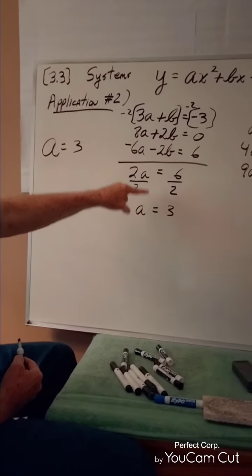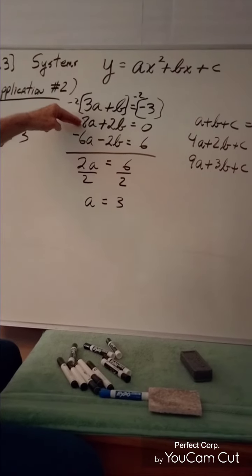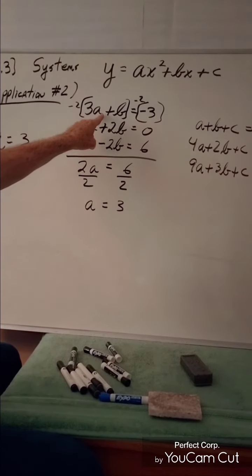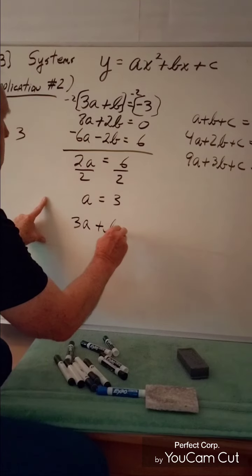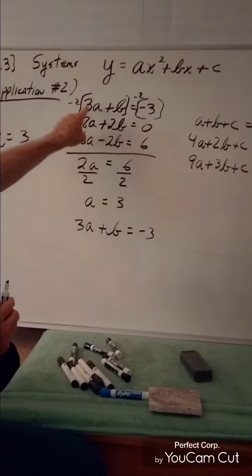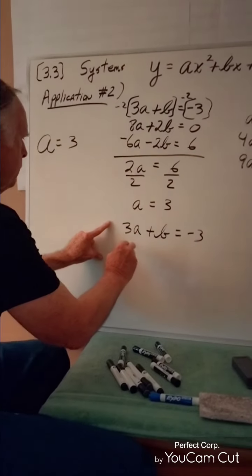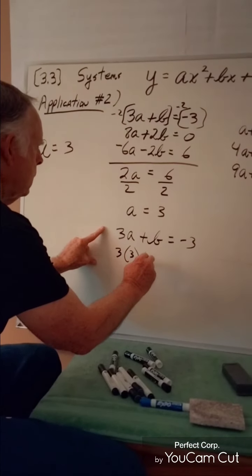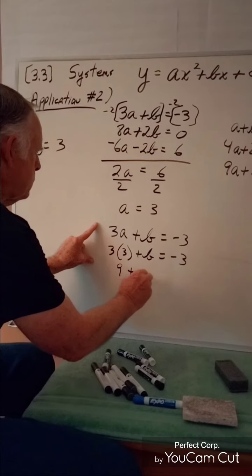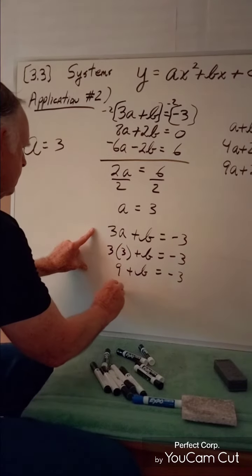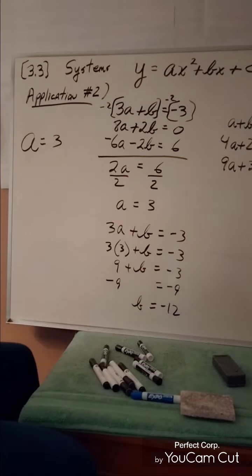Knowing that a = 3, we can find b. Using the top equation 3a + b = -3, substitute a = 3: 3 times 3 plus b = -3, so 9 + b = -3, which gives b = -12.